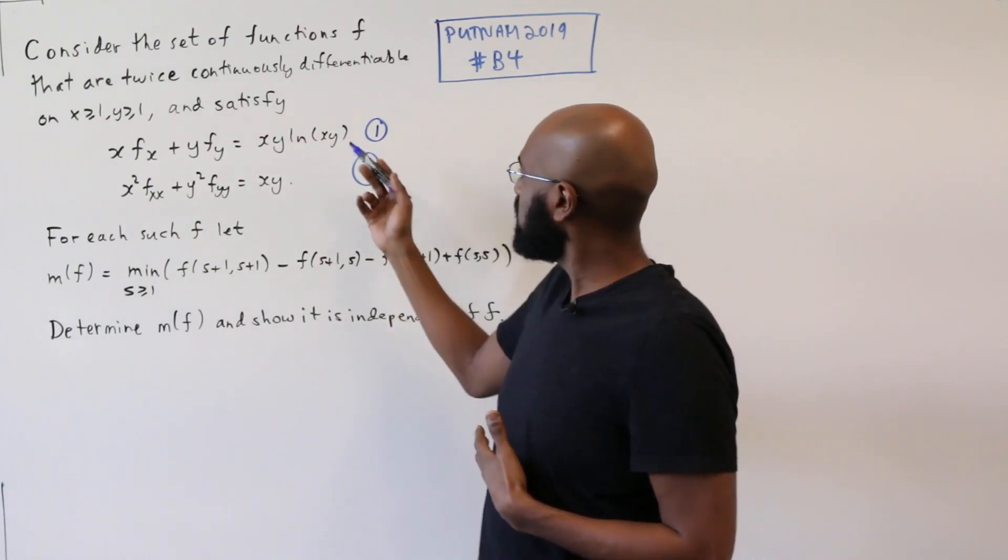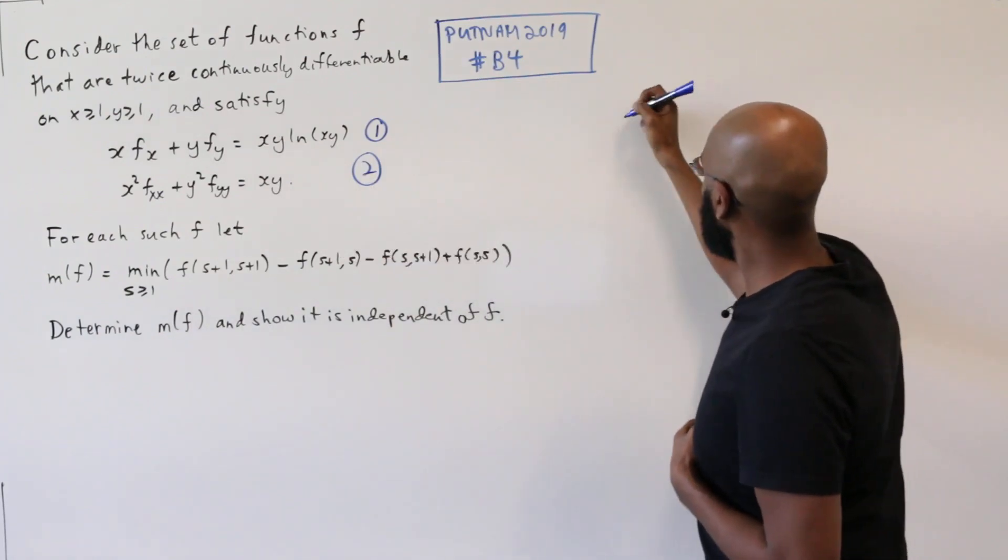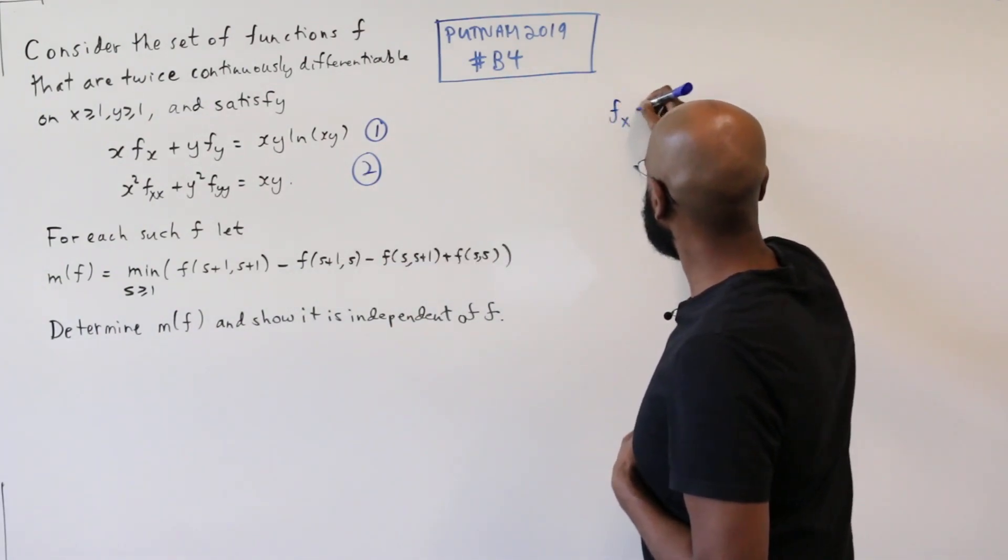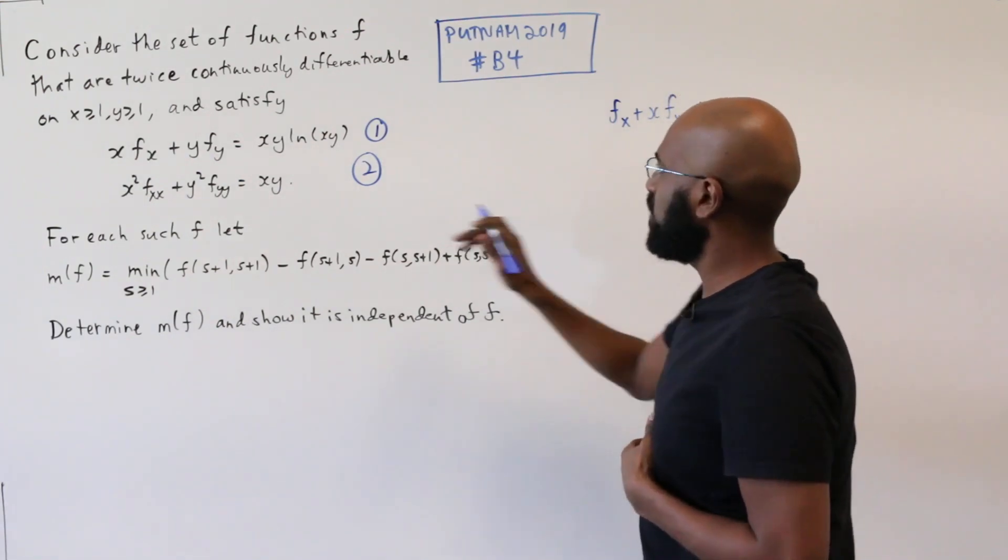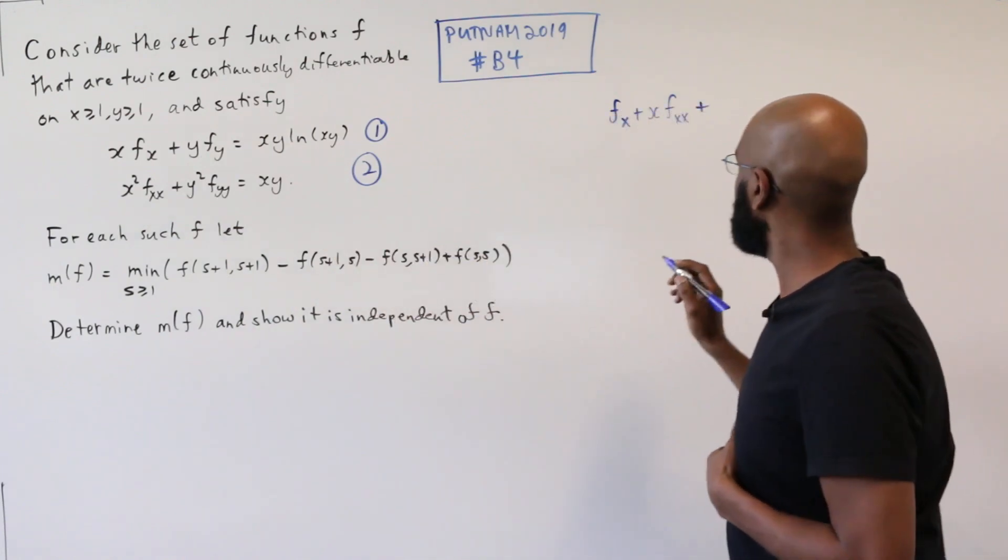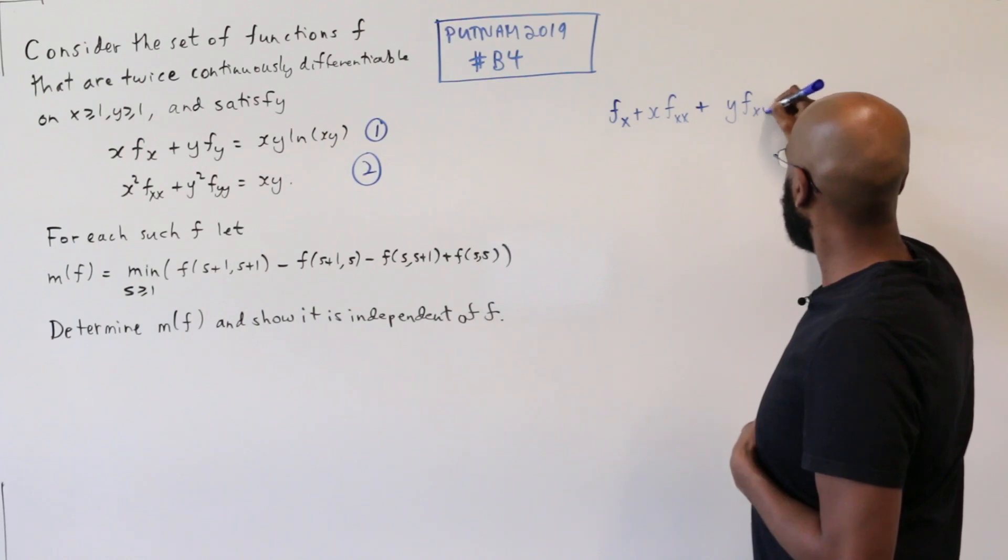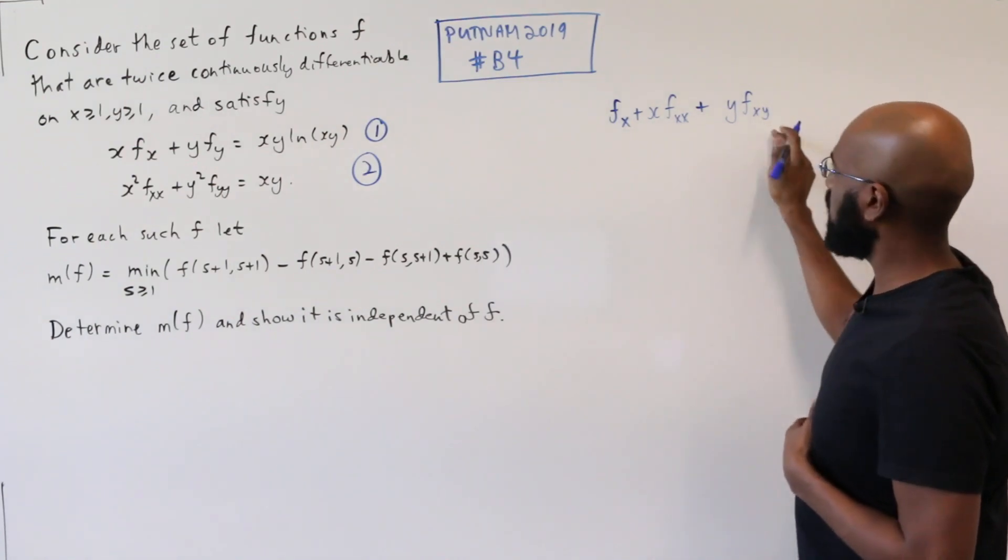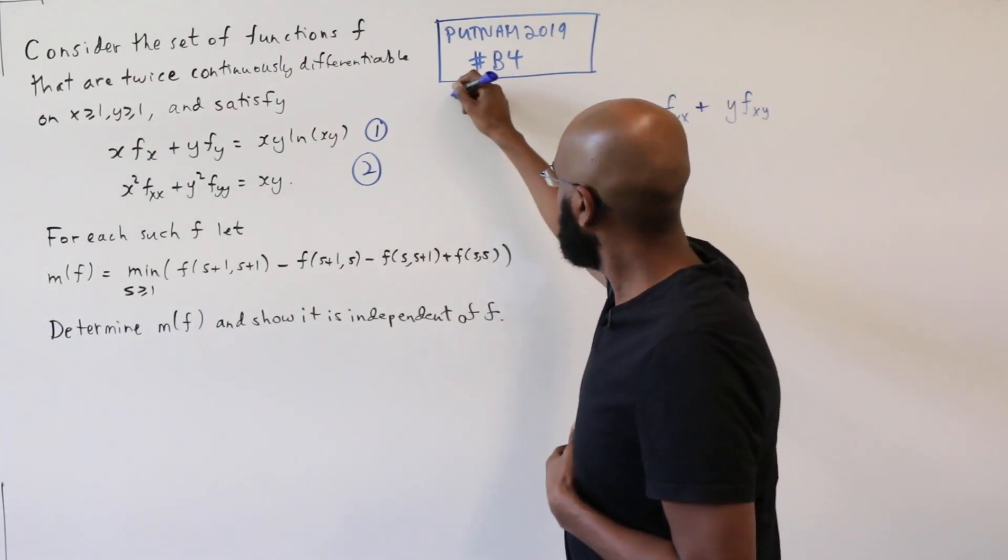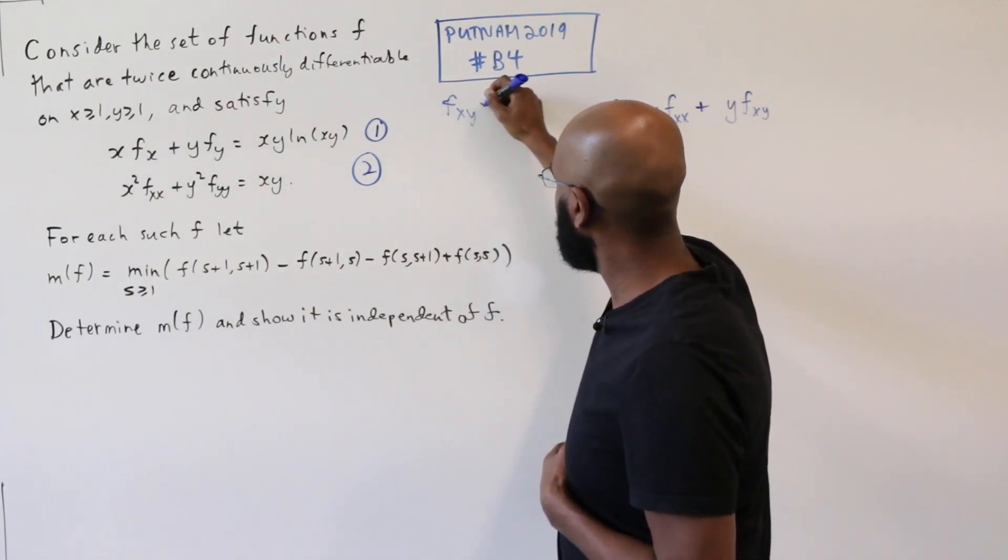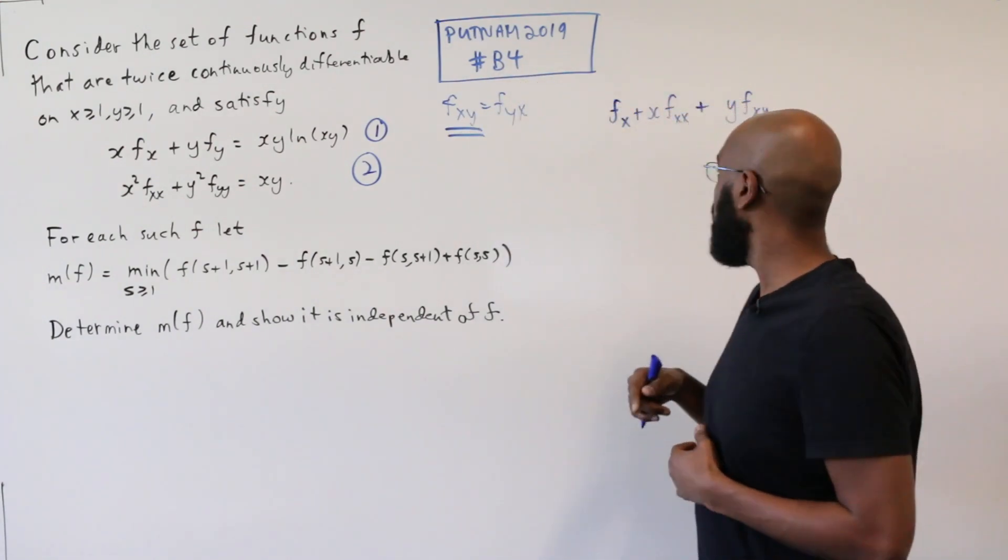So maybe we'll start with taking the derivative with respect to x. So if we do that, we'll get by the product rule fx plus x fxx, we're differentiating this quantity with respect to x, y is a constant, so we get y fxy. And I want to make a note here, because of the stipulation that we're twice continuously differentiable, the mixed partials are actually equal, fxy and fyx are the same. So I'll use fxy throughout any time there's fyx.